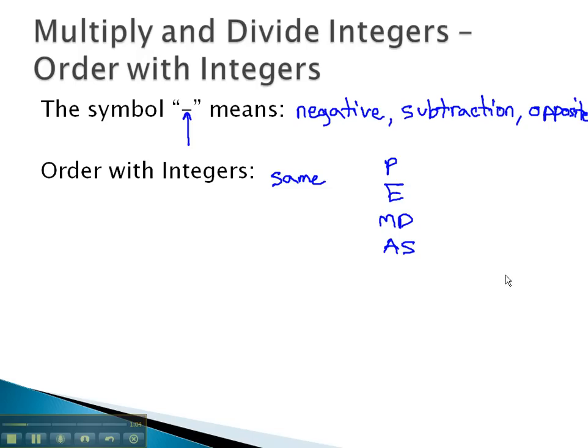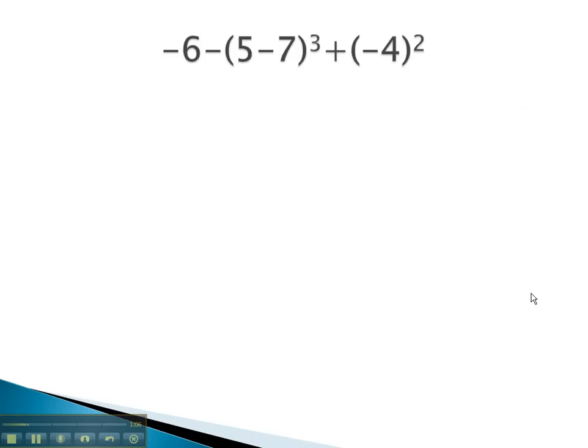So let's take a look at an example which involves some negatives and some order of operations. And if we keep in mind PEMDAS, or please excuse my dear Aunt Sally, we know we're going to start with the parentheses. And what we have inside parentheses is 5 minus 7, so let's do that first. This gives us negative 6 minus, 5 minus 7 is negative 2 cubed, plus negative 4 squared.